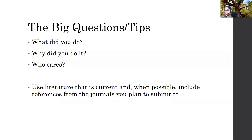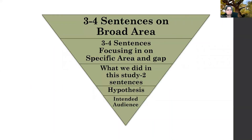Use literature that's current, and when possible use references from the journals you plan to submit to. Going back to the scoping process, make sure your literature search is really thorough among your target journals so you can cite them. There's a practical reason for that — it's how they may find reviewers at those journals, and people honestly like to be cited. It also helps confirm you're fitting in with that journal's scope.